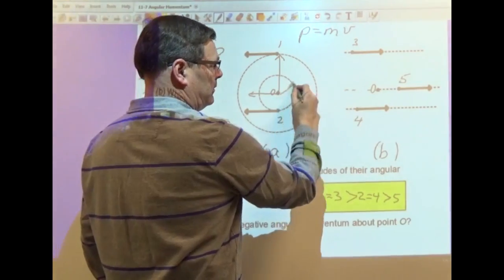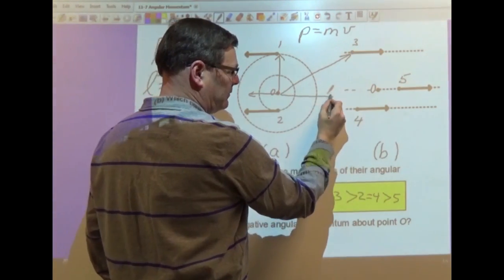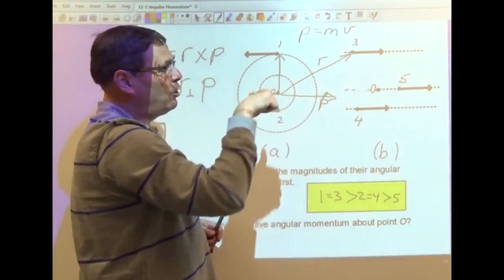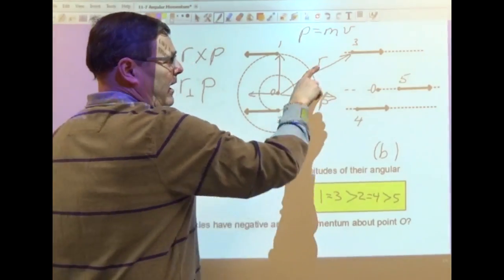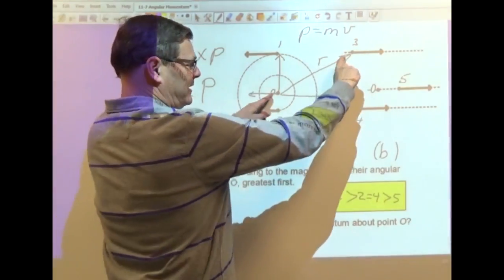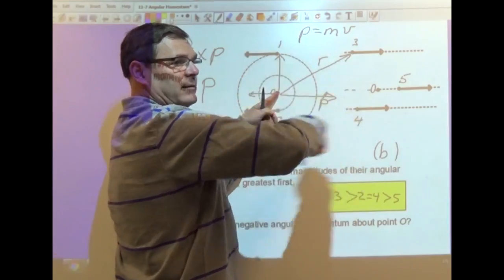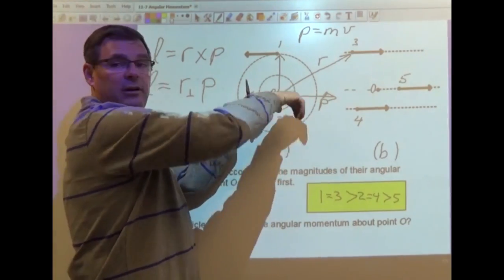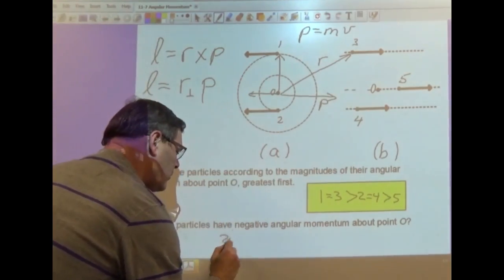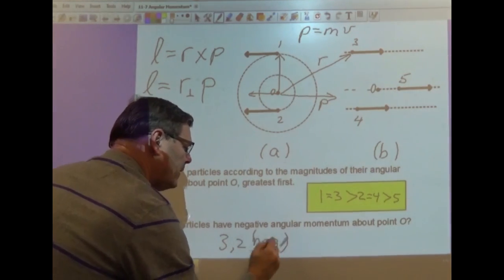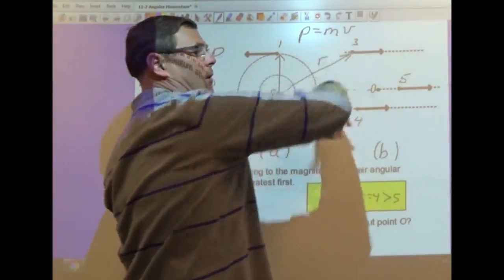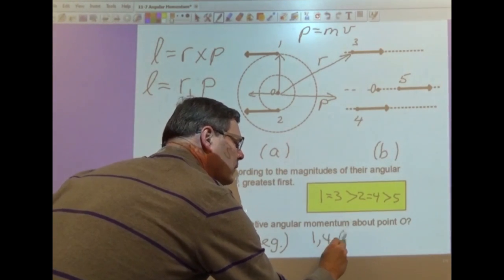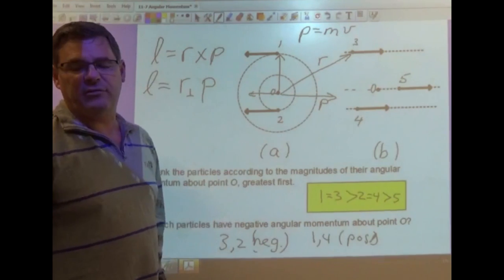For 3, there's R, and if I move it so that it's tail to tail, there's R and there's P. Now when I sweep my hand from R to P, my thumb points into the board, which is the negative direction. So basically you can just look at it like it's a clock, and see that compared to O, 3 is moving in a clockwise direction up here, that's clockwise. 2 is also clockwise, so 3 and 2 are going to be negative, and 1 and 4, that way, are going to be positive. And 5 we decided was 0, so it has no direction.